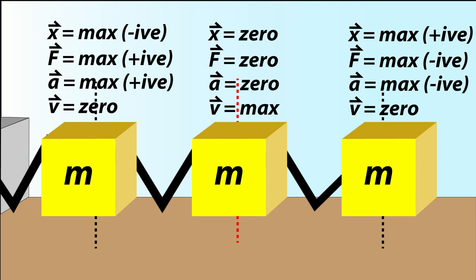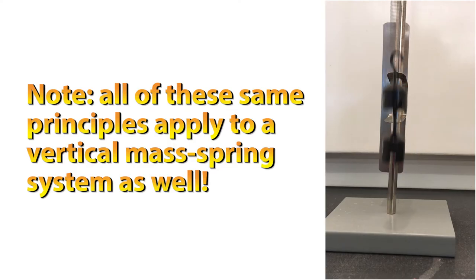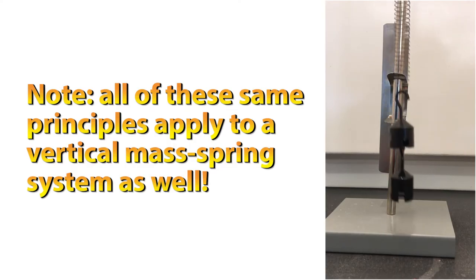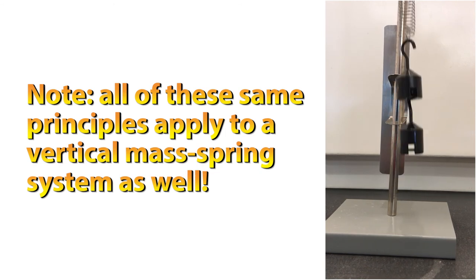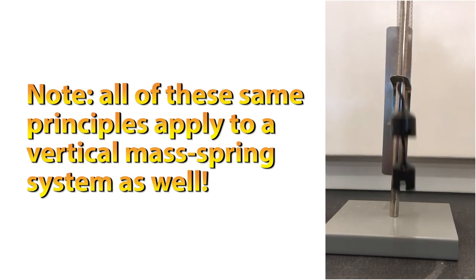Knowing where in the movement of this mass each of these values is a zero value or a maximum is really important when we go to start calculating all of these values. This is a good time to mention that all the ideas we're looking at here, as well as all the equations we're going to get into, also apply in the same way to a vertical mass spring system.